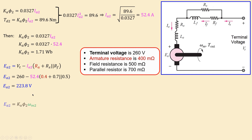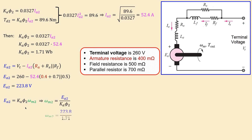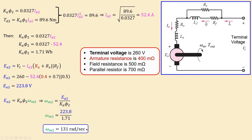Since back EMF equals the new motor constant times the new shaft speed, we rearrange using back EMF of 223.8 volts and new motor constant of 1.71, giving a new shaft speed of 131 radians per second.